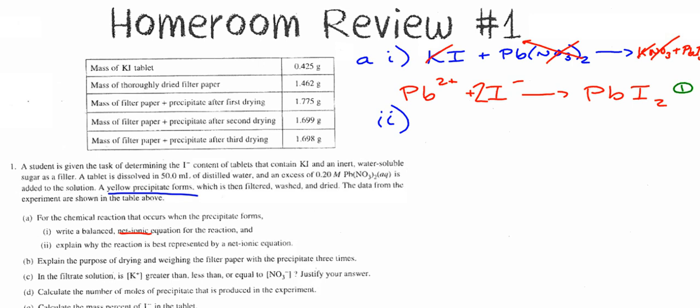It says, explain why the reaction is best represented by a net ionic equation. Well, what are those things called that I crossed off? Do you remember the term? They're spectator ions. Spectators do nothing, right? They don't affect the chemistry. So what the net ionic equation is doing is showing the, you can say the word species or chemicals or atoms. I don't, you can probably come up with most any term that are actually involved in the active chemistry or in the chemistry.